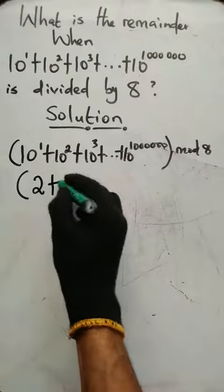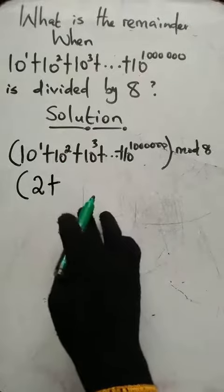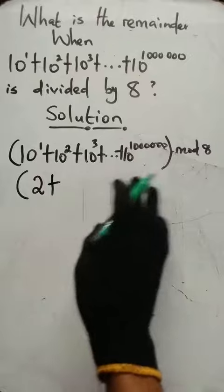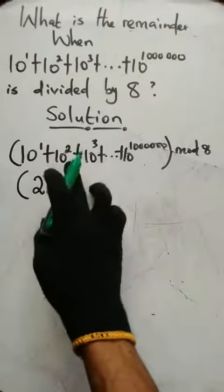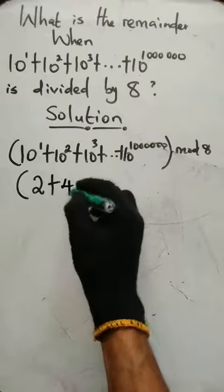Bring down your plus sign. Now we have 10 raised to power 2 which is 100 having two zeros, so it must have remainder when divided by 8. So 100 divided by 8, remember 8 times 12 is 96, so we're having remainder 4.